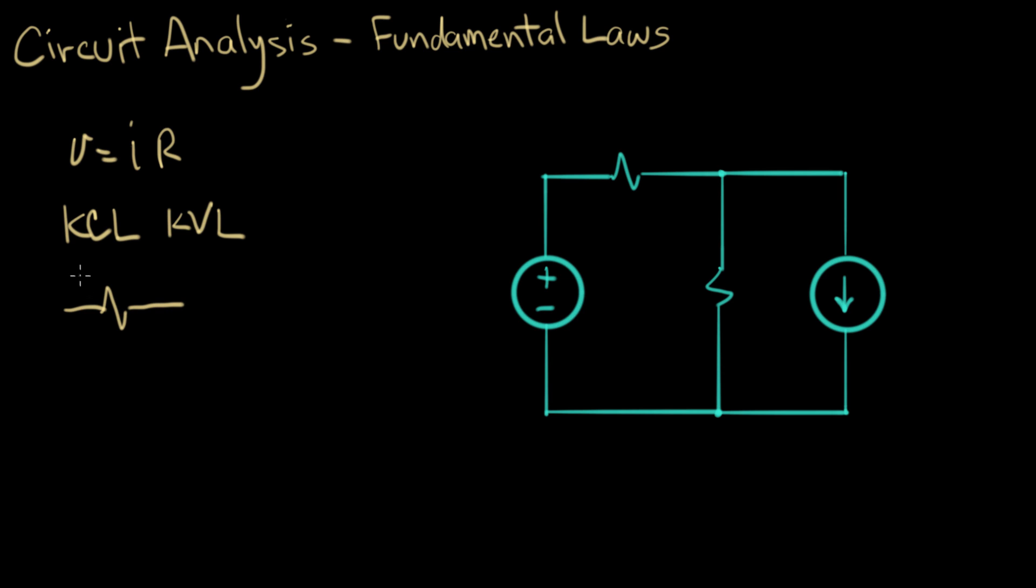So we had a passive sign convention, which was if I label a voltage like that, then I label the current flowing into the positive end. The positive end and the current go together. So these are the tools that we have for analyzing a circuit.